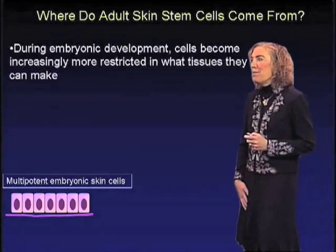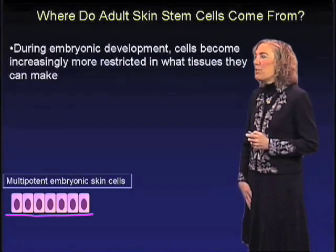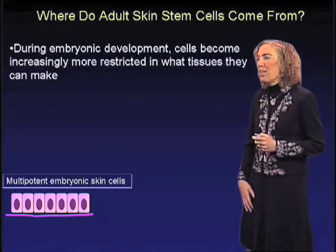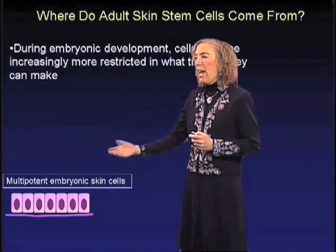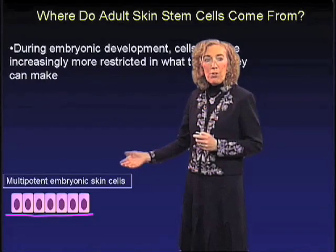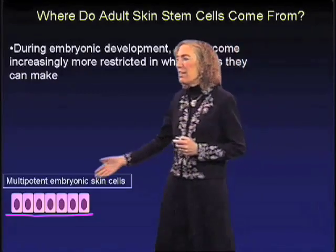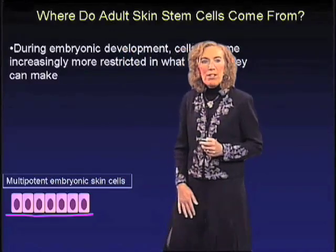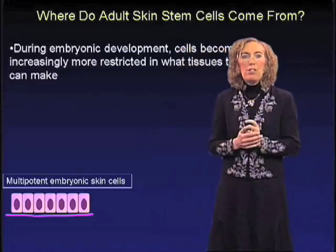So where do adult skin stem cells come from? During embryonic development, cells become increasingly more restricted in what tissues they can make. Back in early development, the skin surface begins to form after gastrulation of the embryo. At that stage, there's a single layer of multipotent embryonic skin stem cells, and these cells can give rise to the epidermis, the hair follicle, and the sebaceous gland.